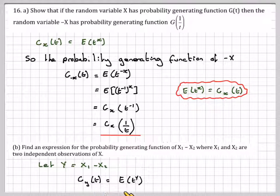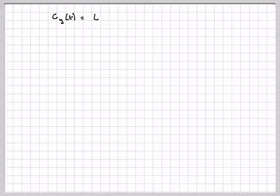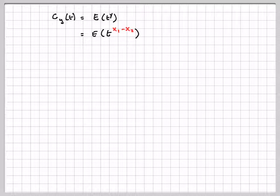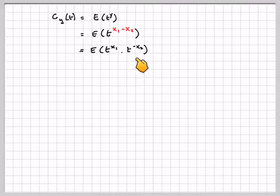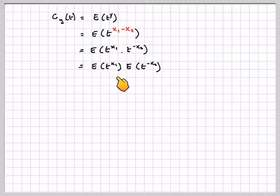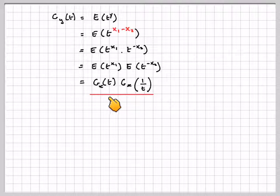g_Y(t) = E[t^Y] = E[t^{X1 - X2}] = E[t^{X1} · t^{-X2}], which by independence using expectation algebra equals E[t^{X1}] · E[t^{-X2}]. That becomes g_X(t) · g_X(1/t).